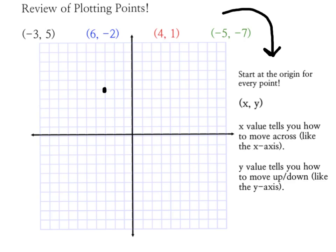Our next ordered pair is (6, -2). I go back to the origin. I'm going to start over with a new ordered pair. I'm going to move across positive 6, that means I'm going to move to the right 6. And from there, I'm going to be moving down 2. And there I'll put my point.